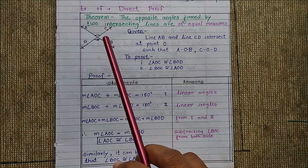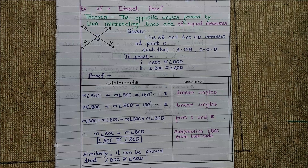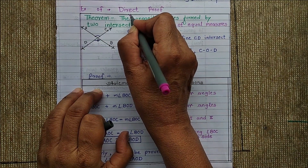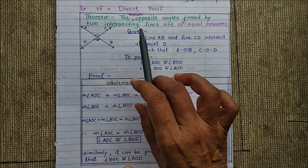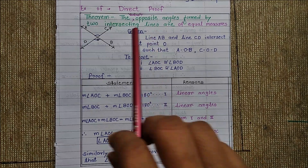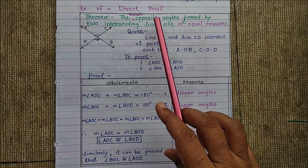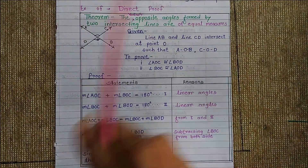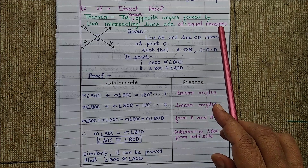The theorem is: the vertically opposite angles formed by two intersecting lines are of equal measures. The part 'of equal measures' is the consequent.